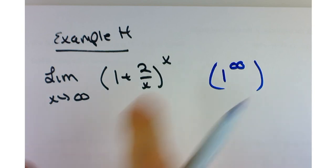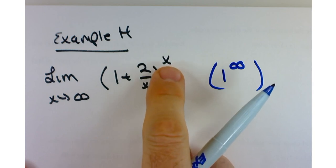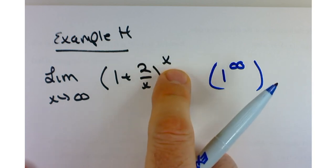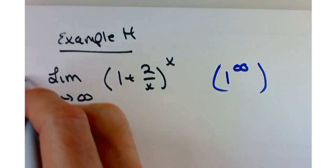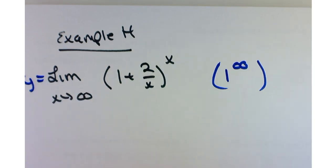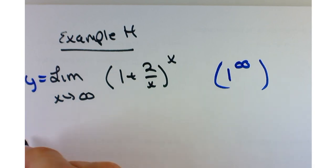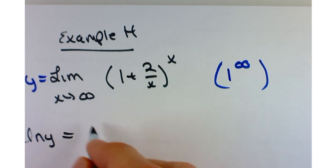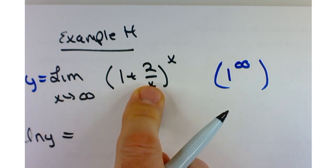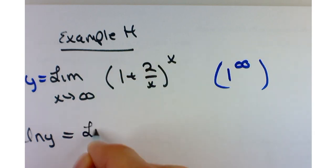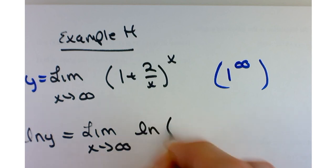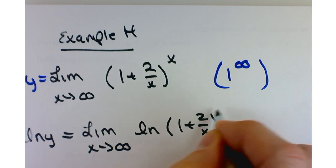Although we want to apply L'Hôpital's rule, we can't do it just yet. The hint is that you've got this exponent, which is a function of x — it's not just a constant. Like we did with the last one, we're going to take the natural log of both sides. So I get ln(y) equals the ln of this limit. I'll interchange the ln and the limit and jump straight to: limit as x approaches infinity of ln of (1 + 2/x) to the x power.